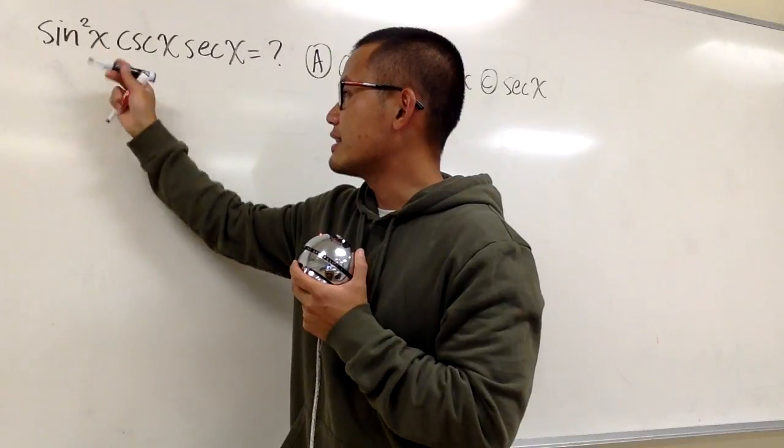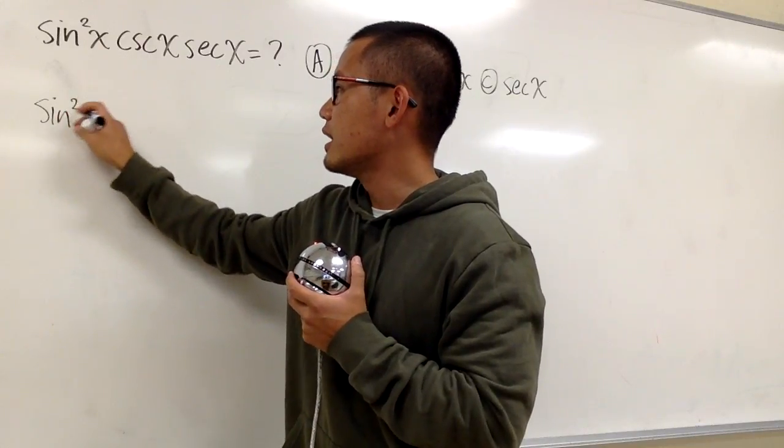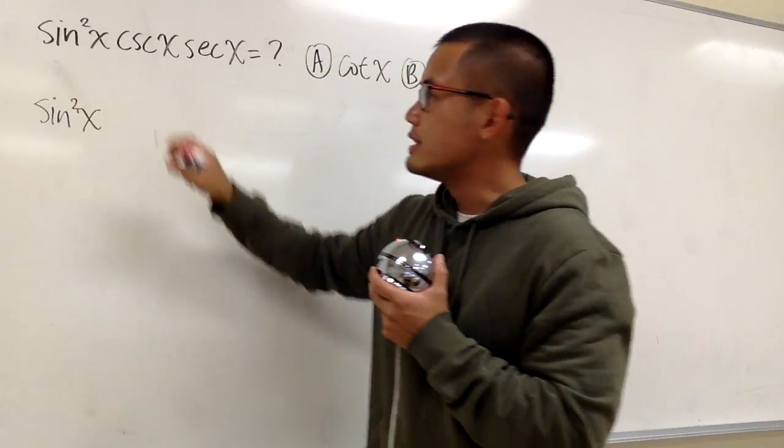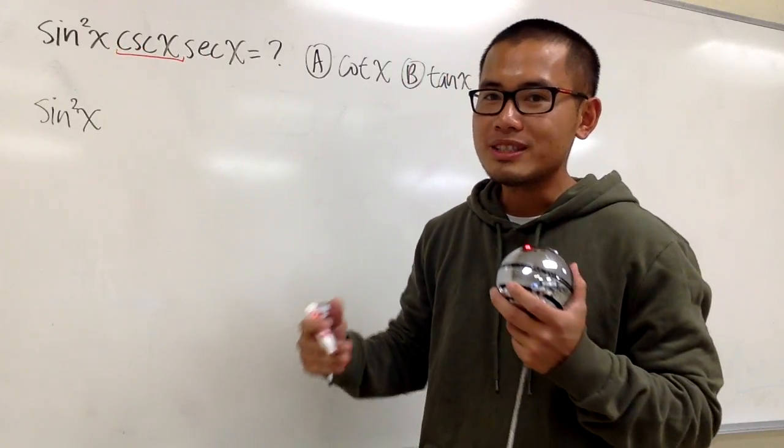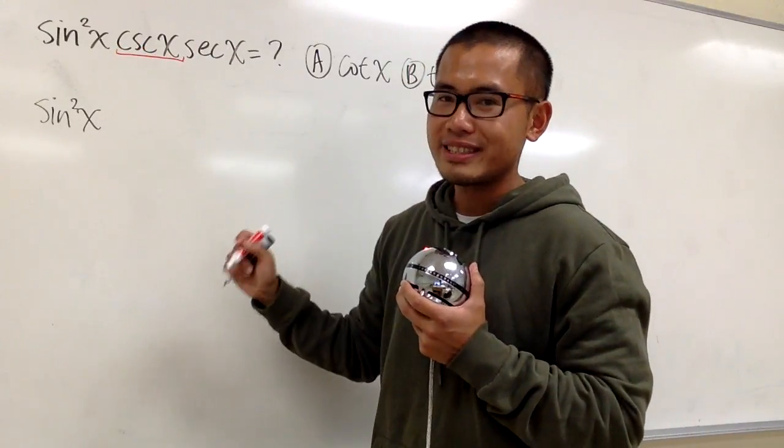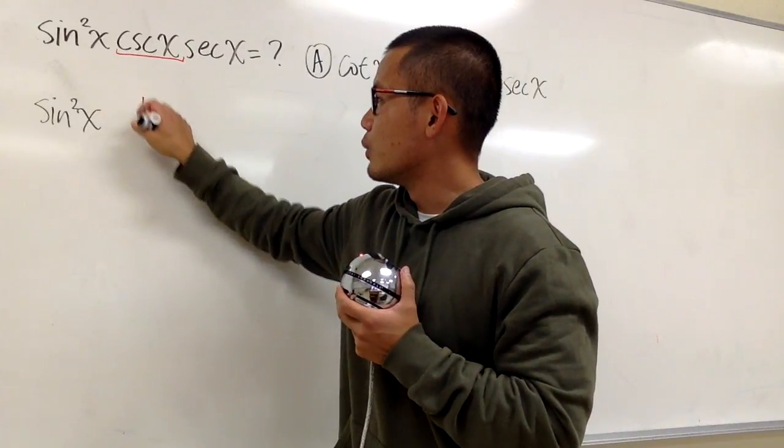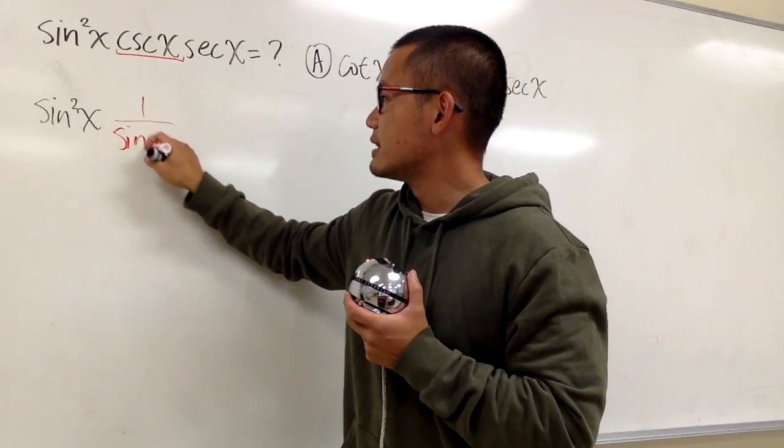So for sine squared x, that's good, we'll just write it down as it is, sine squared x. And then we see we have cosecant x. We want to remember the identity for cosecant x. This is the same as 1 over sine x.